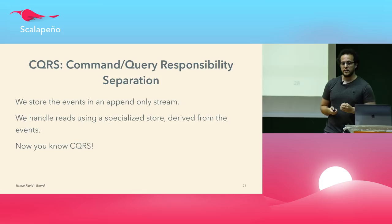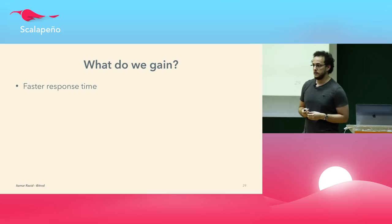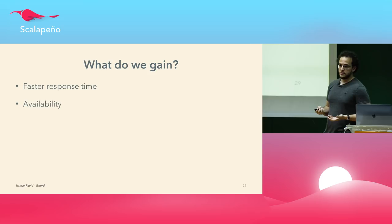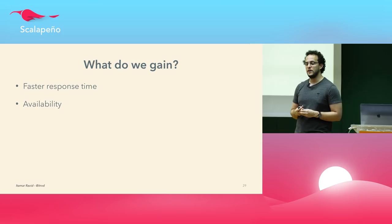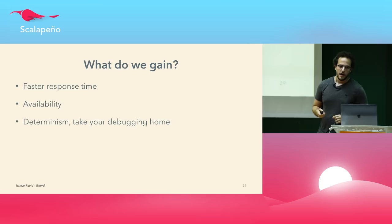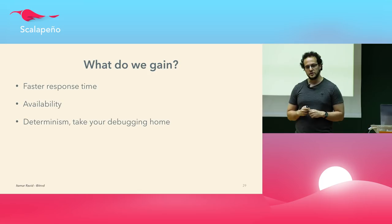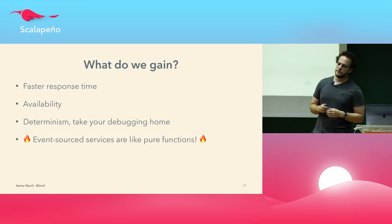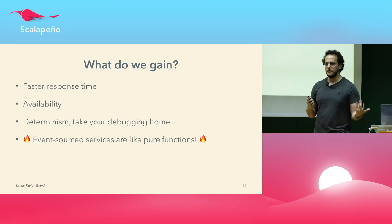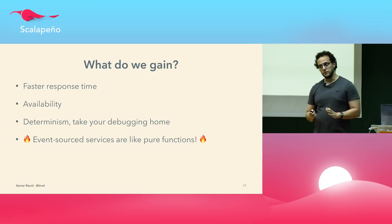What do we gain from this architecture? First, faster response time because not many services are involved. Next, availability — we just need to handle one service to get good availability. And lastly, determinism — very important when debugging production systems. Event-sourced services that don't need to reach out to other services are kind of like pure functions: all their output is determined entirely by the input, by the command they receive.